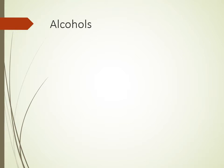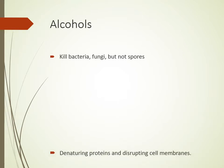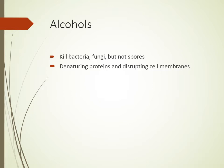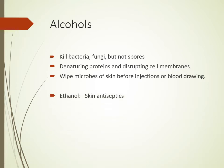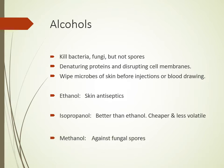Alcohol kills bacteria and fungi but does not kill spores. Its mechanism of action is denaturation of proteins and disruption of the cell membrane. It is useful for wiping microorganisms from skin before injections or blood drawing. There are three forms: ethanol, used for skin antiseptics; isopropanol, which is better, cheaper, and less volatile than ethanol; and methanol, which is active only against fungal spores.